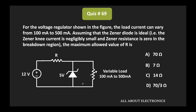In this given voltage regulator circuit, the load current can vary between 100 mA to 500 mA. We have been asked to find the maximum allowed value of R such that this circuit will work as a voltage regulator. We have been given that the Zener diode is the ideal diode.